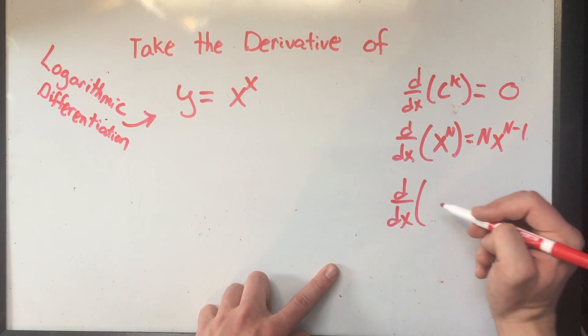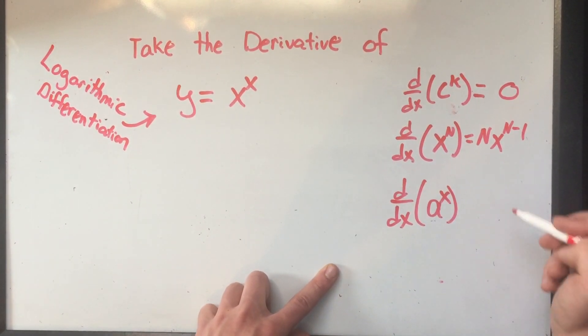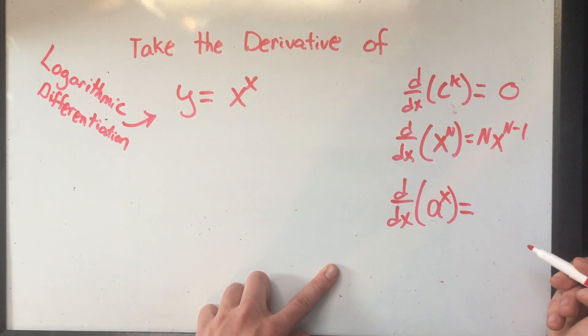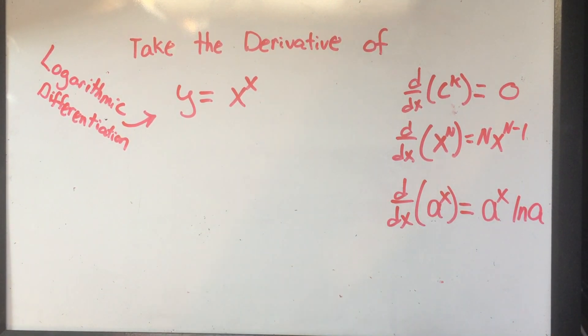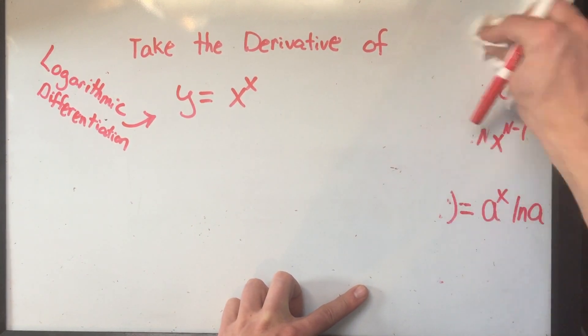You've even probably done a constant to a variable power. Well, if you want to take the derivative of a constant to a variable power, you just copy it and you multiply by the natural log of that number. But I probably have a video about that somewhere if you haven't seen that yet. But what happens when you have a variable to a variable power? Well, then you need to use what's called logarithmic differentiation.